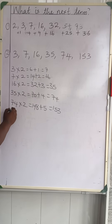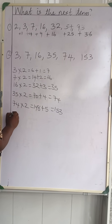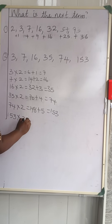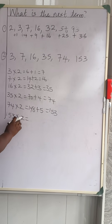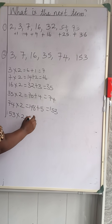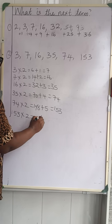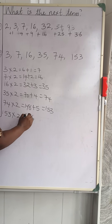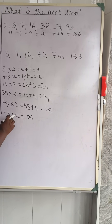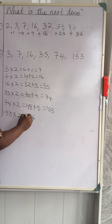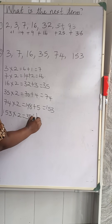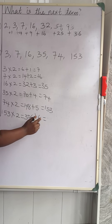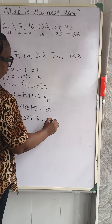To find the term after that, we multiply 153 times 2: 2 times 3 is 6, 2 times 5 is 10 so write 0 and carry 1, 2 times 1 is 2 plus 1 is 3 — giving 306, and then we would add 6 to get 312.